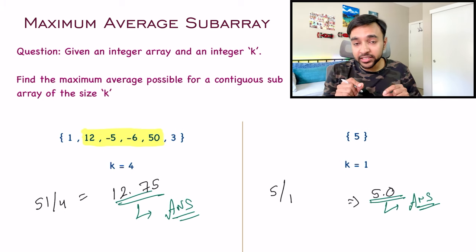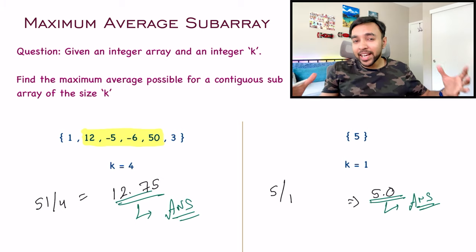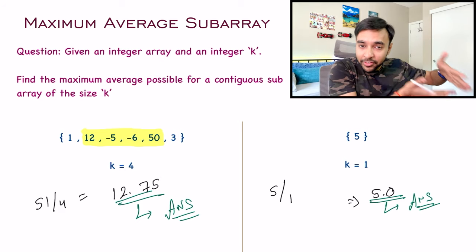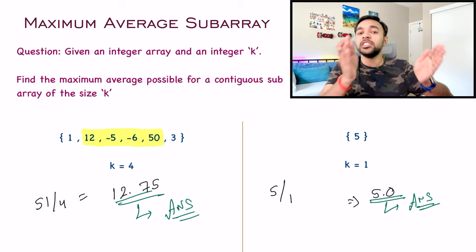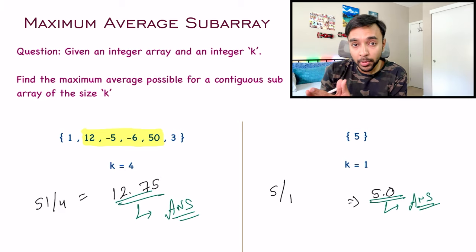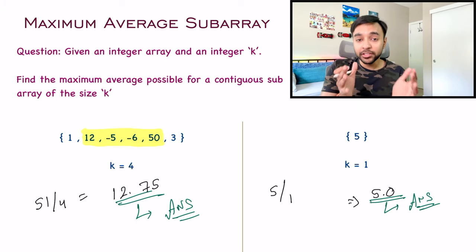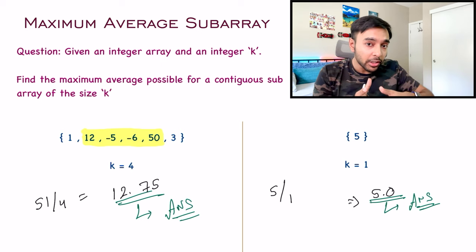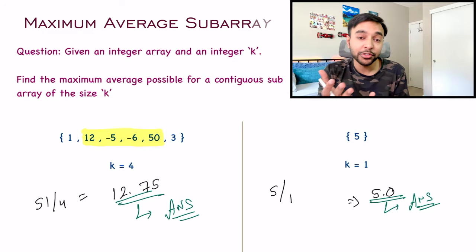An important thing to note is that the value of k will always be less than or equal to the size of the array, because that is how you can select a contiguous subarray. If you have just seven elements and k is 10, you cannot select 10 elements from just seven. This constraint is already given in the problem, so you do not have to worry about it. Now let's dive into the solution.